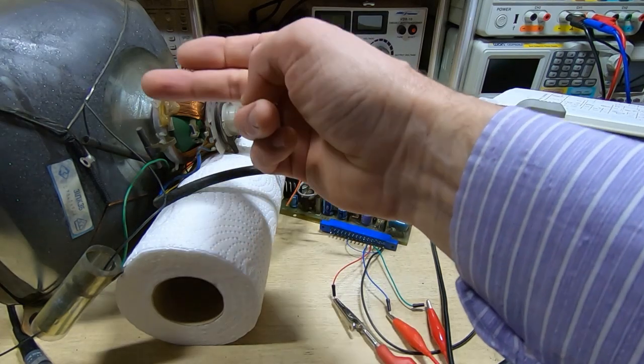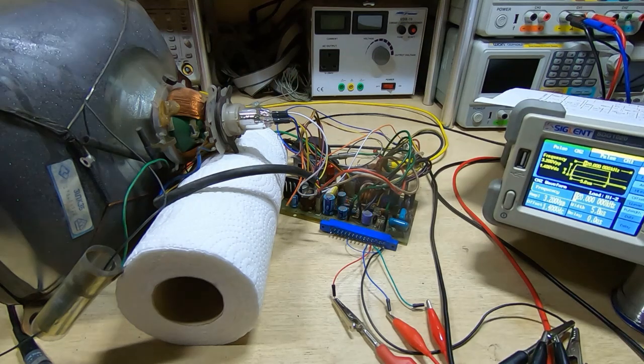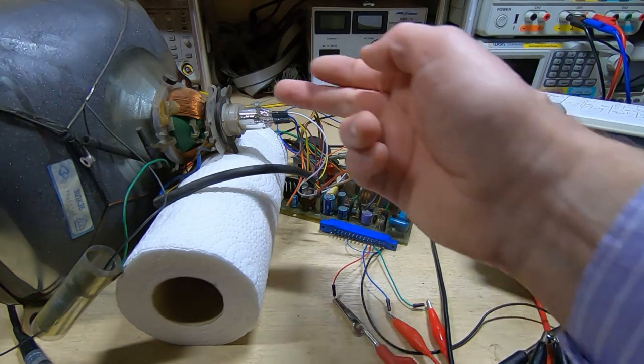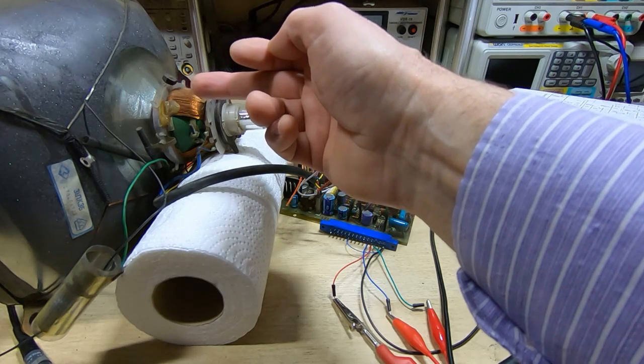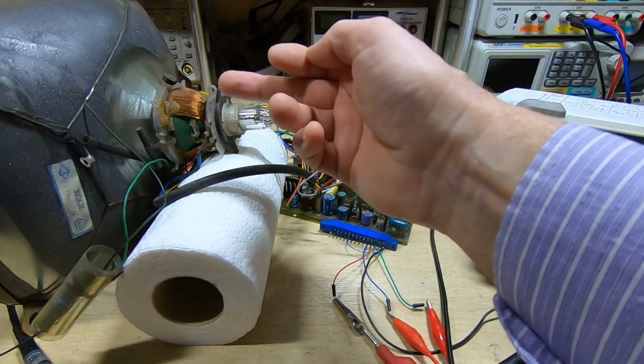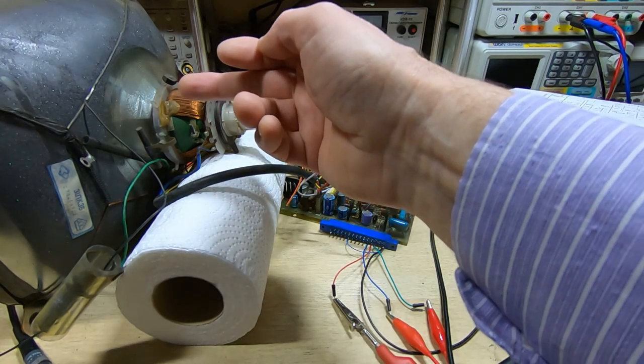As soon as these scan coils are moved back, the electron beam when it tries to access or reach the extremities of the tube, it hits the neck of the tube or where the beam exits the neck of the tube.